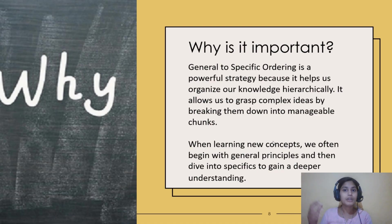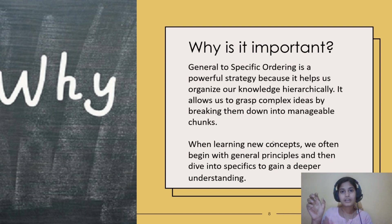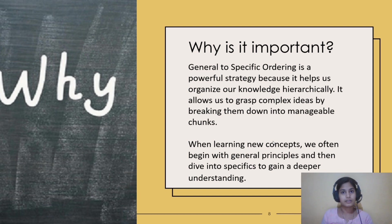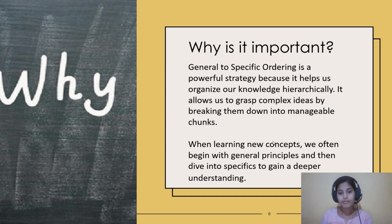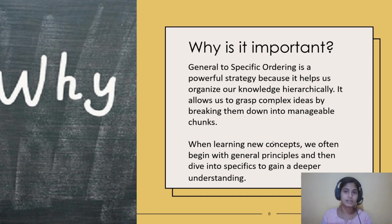But you cannot keep all books in a general shelf only — it should be easy to access. So you make separate shelves for specific fruits so that it is easy to access those books. You cannot put every book inside your general shelf only. When learning new concepts, we begin with general principles and then dive into specifics to gain a deeper understanding.